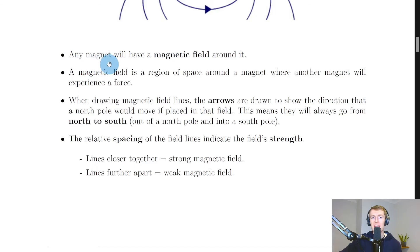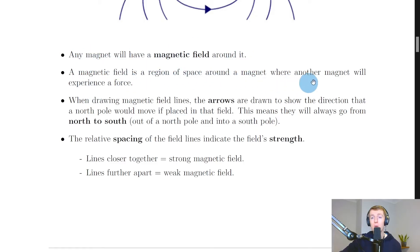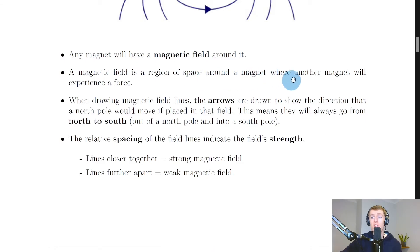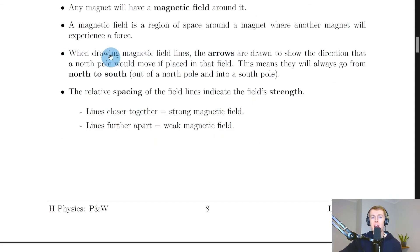Any magnet will have a magnetic field around it, just like any charge has an electric field around it. We say that a magnetic field is a region of space around the magnet where another magnet will experience a force. This is worded similarly to our electric field definition, which said that an electric field is a region of space around a charge where another charge will experience a force — we've just replaced 'electric field' and 'charge' with 'magnetic field' and 'magnet'.